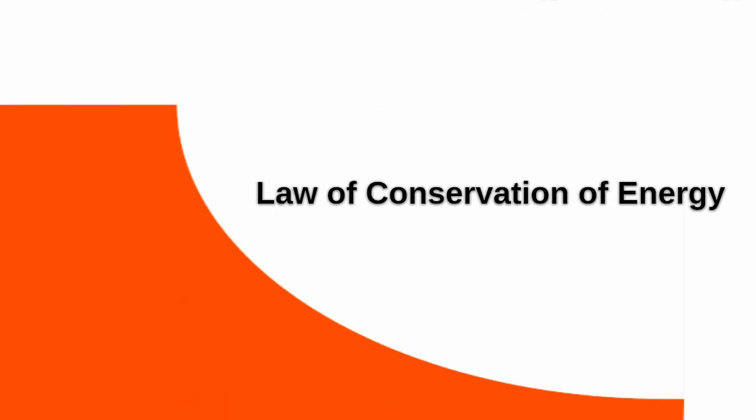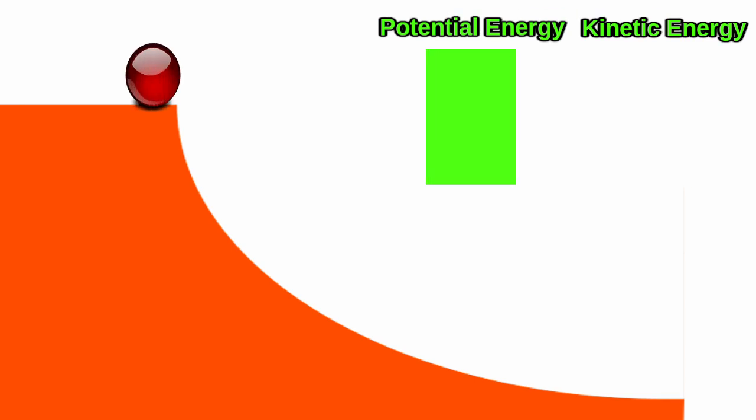Well, you may be asking why the cycloid is the fastest path rather than any other curve. The key is the conservation of energy. According to the law of conservation of energy, when an object, let's say a marble, rolls down a curve, its potential energy converts to kinetic energy.